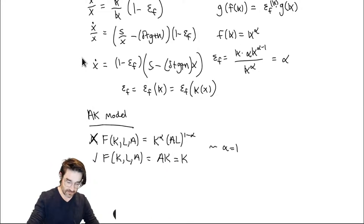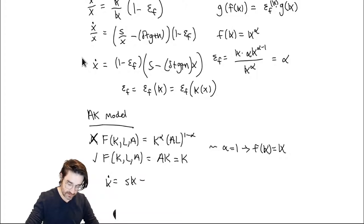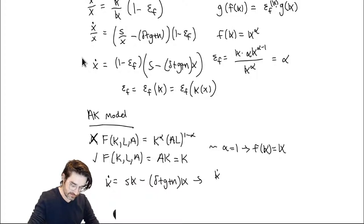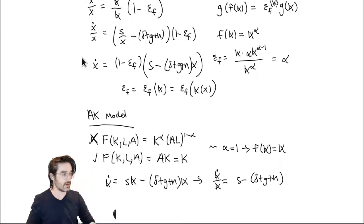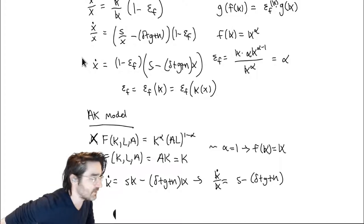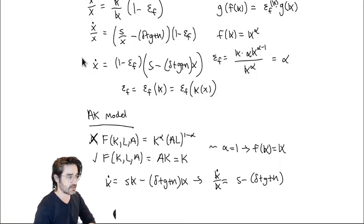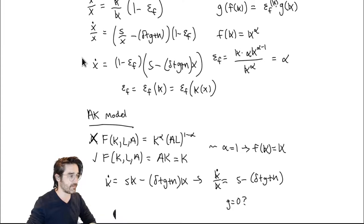If that constant is positive, you just get perpetual growth because there are no decreasing returns to scale — you can keep going forever. Even if G equals zero, you still get growth. This is a utopian society where machines do all the production; people don't need to work. You produce linearly, invest some of that, which increases production capacity linearly, and there's no decreasing returns to dampen it.